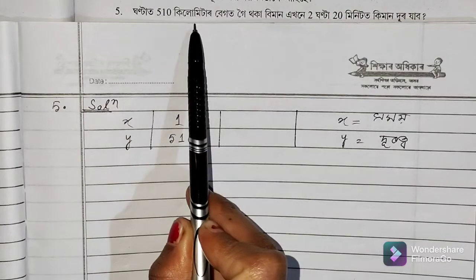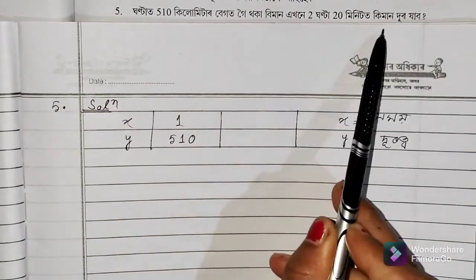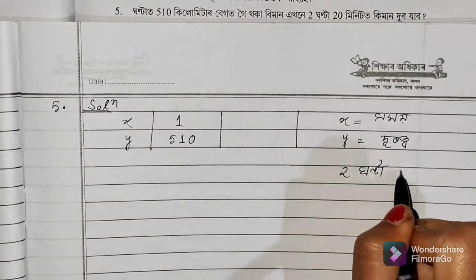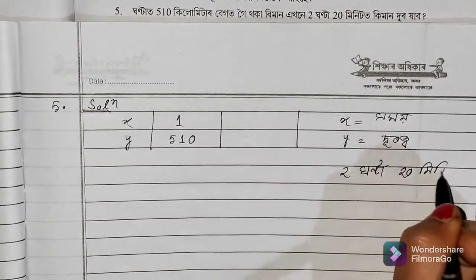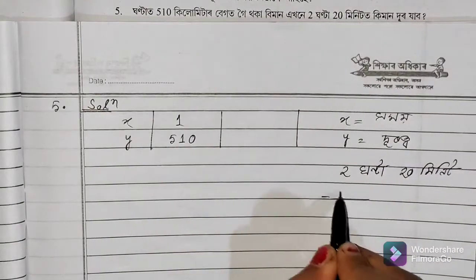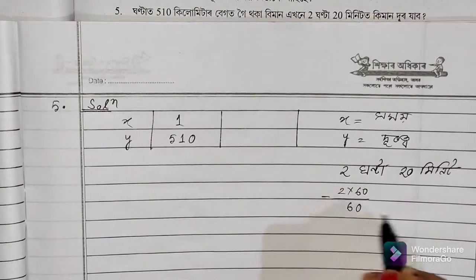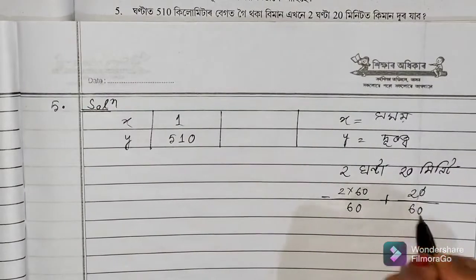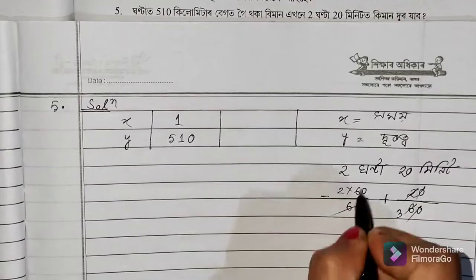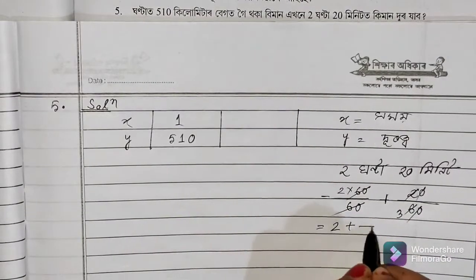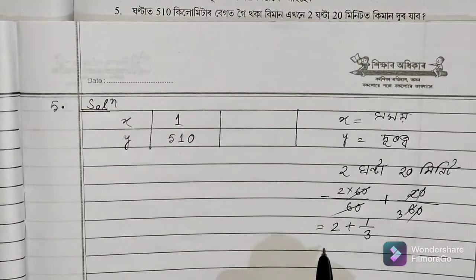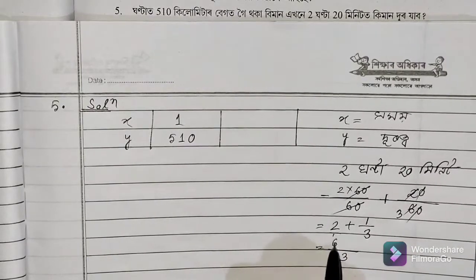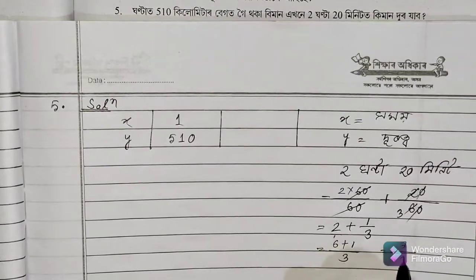So, if we consider the time, let us find the difference between the two times. We will talk about total how many times are there. 2 hours into 60 divided by 60 plus 20 minutes divided by 60, so we will have 2 and 1/3. 60 divided by 60 is equal to 2 plus 1 by 3, which equals 7 divided by 3.